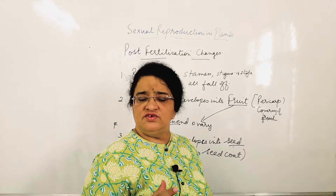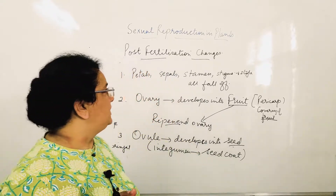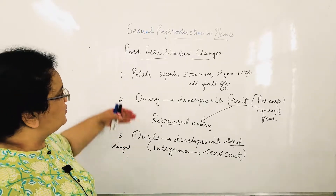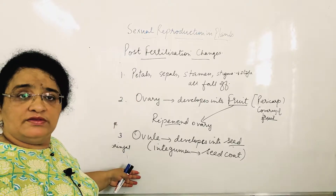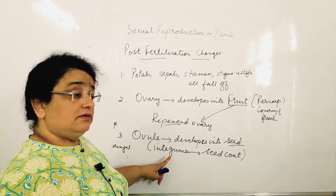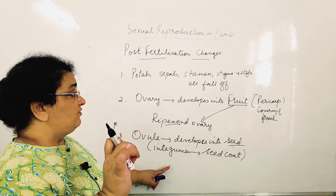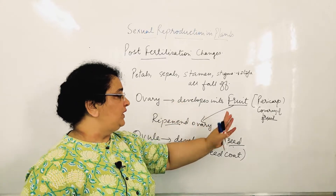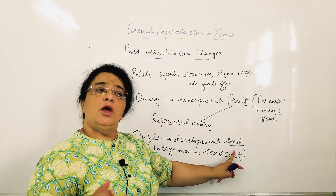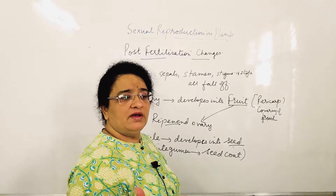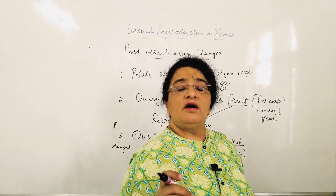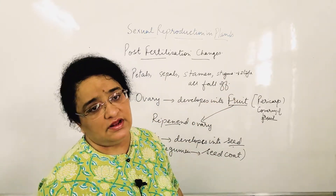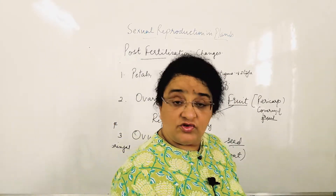A small question that often comes: what are the post-fertilization changes? You don't have to write in too much detail — the persistent calyx and extra facts were just additional information. You only need to write the main points. Sometimes a one-mark fill-in-the-blank question comes: 'Ovary changes into ___' — answer is fruit. 'Ovule changes into ___' — answer is seed. Sometimes a direct question asks you to explain what happens after fertilization.